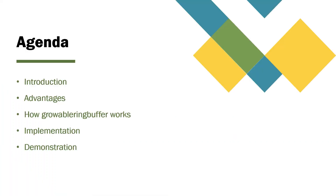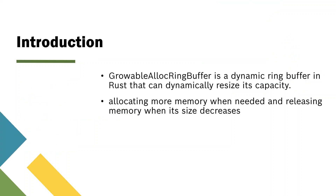Today we are looking at the growable lock ring buffer concept in Rust. We'll start with an introduction about that, then see the advantages, and then how the growable ring buffer actually works in Rust. After that, we'll go through a line-by-line implementation example, and finally I will show you a demo.